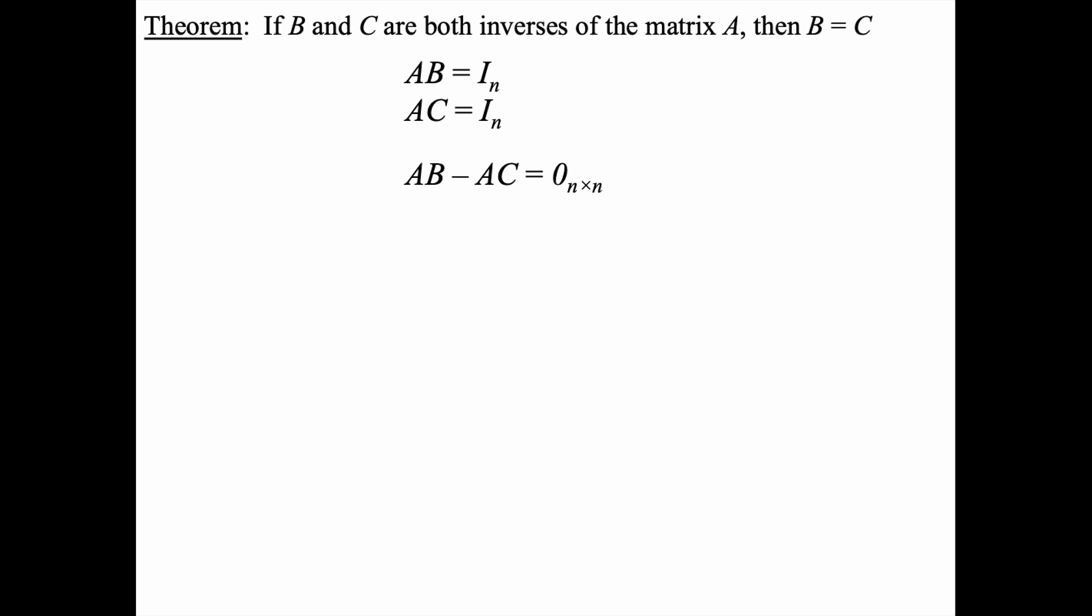AB minus AC would be some zero matrix size n by n. And of course they know by the property of matrix arithmetic that's simply a distributive example. So that's equivalent to A times B minus C equals the zero matrix.